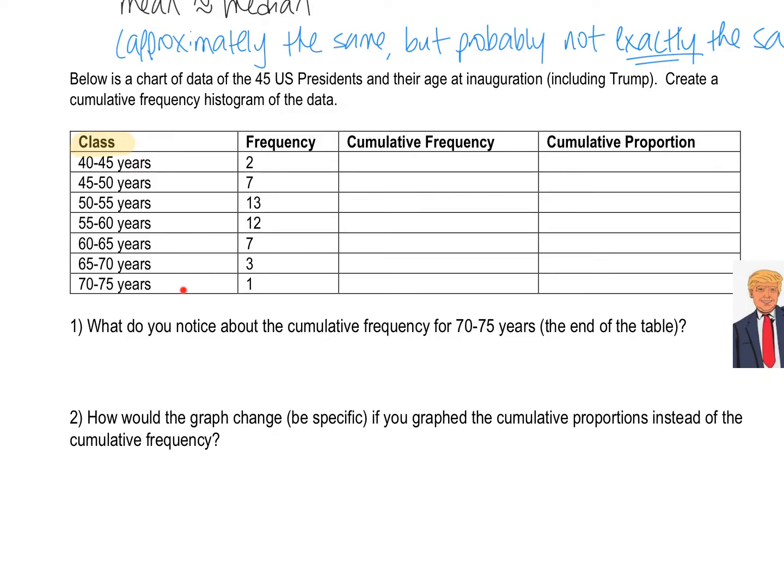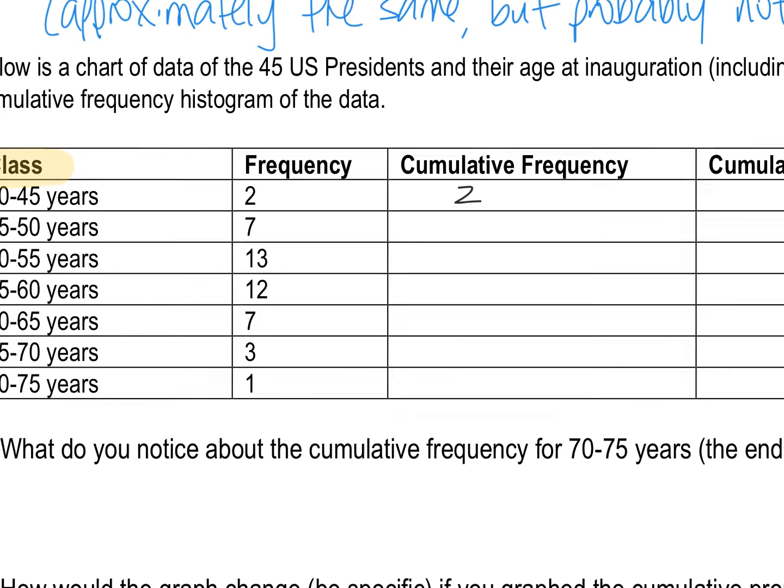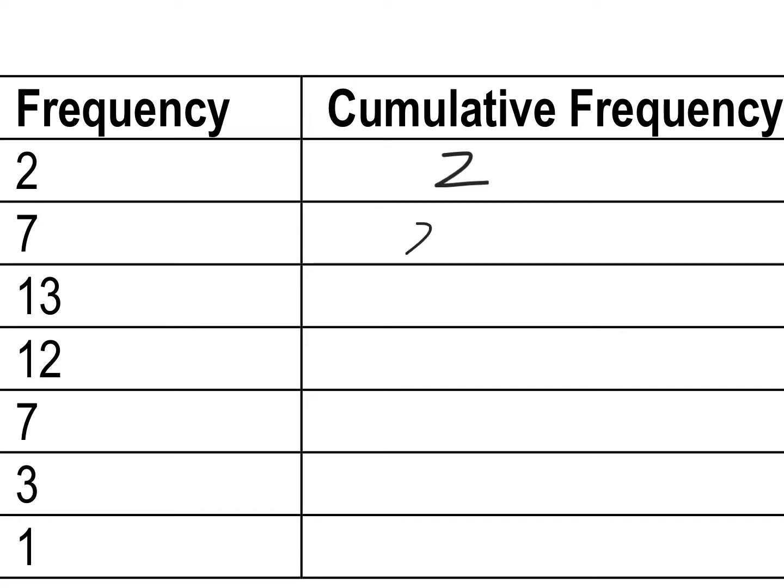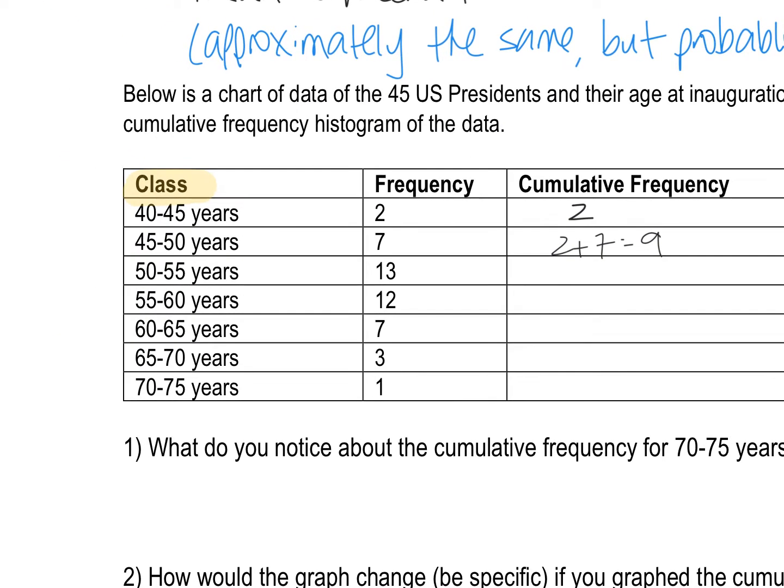If I want to do a cumulative frequency here, the total number of presidents that are less than 45 years old when they were inaugurated is two. But how do I do the next column? If there are two presidents in this class and there are seven presidents in this class, that means that two plus seven is nine. There are nine presidents total that are 50 years old or younger. So two plus seven, that means there are nine total presidents younger than 50.